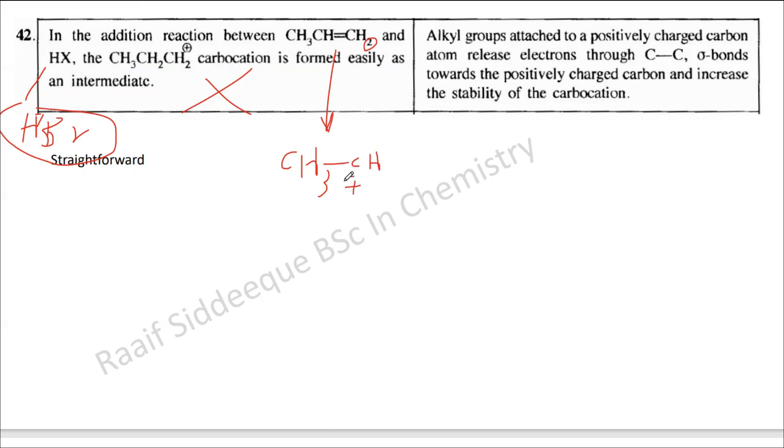Alkyl groups attached to a positively charged carbon release electron density through the induction effect, sigma bonds, and positively increase the stability of the carbocation. We discussed this many times, including the stability of the tertiary carbocation.